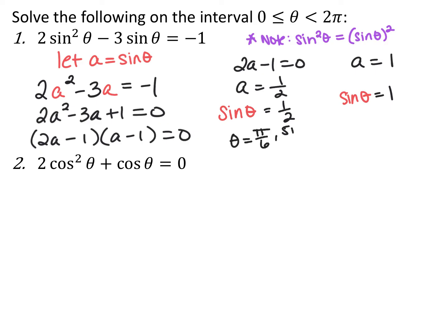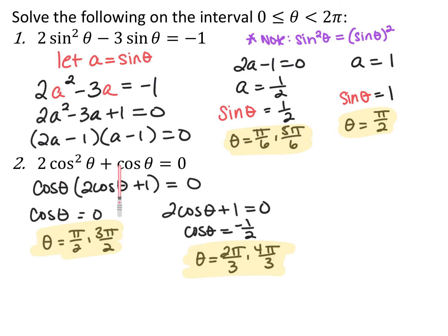Where between zero and two pi does sine theta equal one half? That's pi over six and five pi over six. Where does sine theta equal one? That's pi over two. For the practice problem, two cosine squared theta plus cosine theta equals zero: factor out a GCF of cosine theta to get cosine theta times (two cosine theta plus one) equals zero. By the zero product property, cosine theta equals zero — giving pi over two and three pi over two — and cosine theta equals negative one half — giving two pi over three and four pi over three.